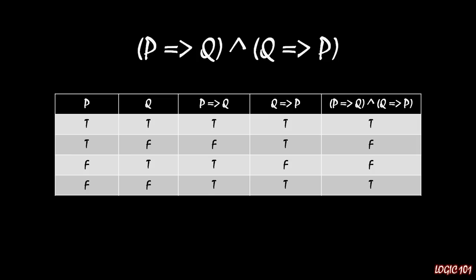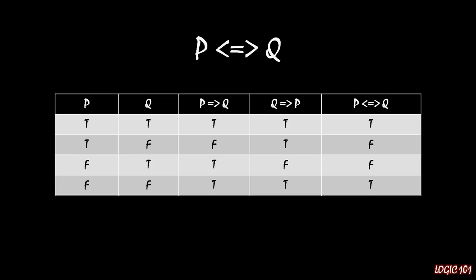Now why is it the case that we don't have vacuously true statements being false? Let's switch back to p if and only if q and switch the truth values of the vacuously true statements to false. In that case, p if and only if q would only be true in the top row where both p and q are true. But this does not fly, and here's why. The biconditional is what we think of as equality in logic — it's the equivalent of the algebraic equals sign. It says that p and q are essentially the same thing: when p is true, q is true; when p is false, q is false; and vice versa. In other words, they have the exact same logical identity.